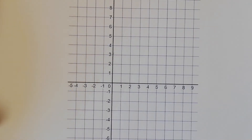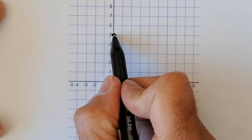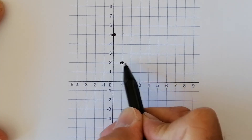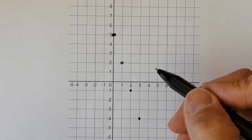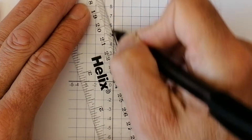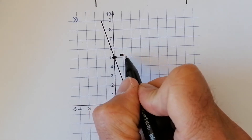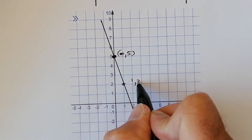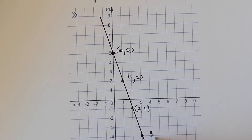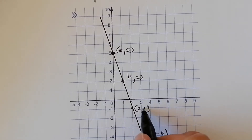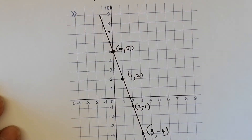Drawing the line through those dots gives my straight line equation y equals negative 3x plus 5. Reading off some coordinates: (0, 5), (1, 2), (2, negative 1 — actually 2 along and 1 down gives that point — and (3, negative 4).